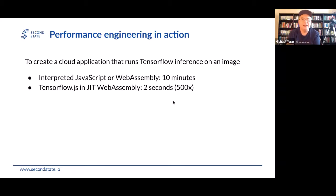Ten minutes is clearly too long for a web application. It may be okay for an asynchronous function where there's plenty of time on the back end to process things, but 10 minutes for waiting is clearly not good enough for web applications. Now if we rewrite it in TensorFlow.js in just-in-time WebAssembly — TensorFlow's C library cross-compiled into WebAssembly through the EMCC compiler, running in V8 WebAssembly with JIT compiler optimization — that speeds up significantly because the application is compiled and run instead of being interpreted. That alone creates 500 times performance gain, reducing from 10 minutes to around two seconds.